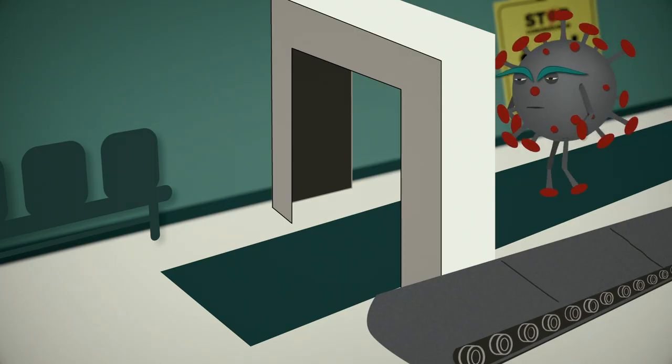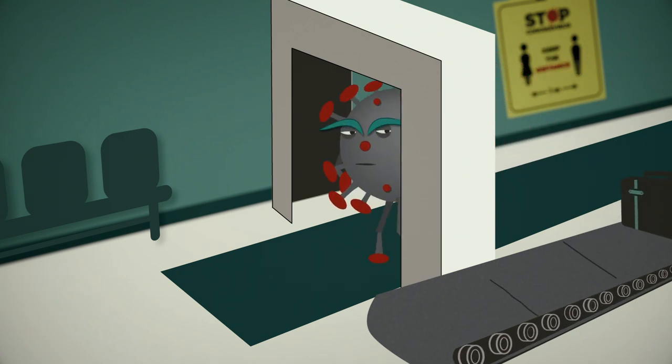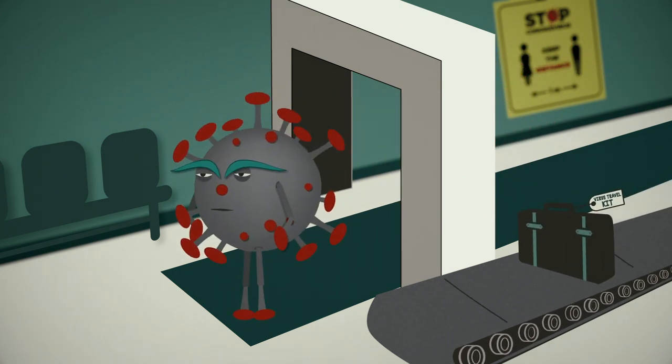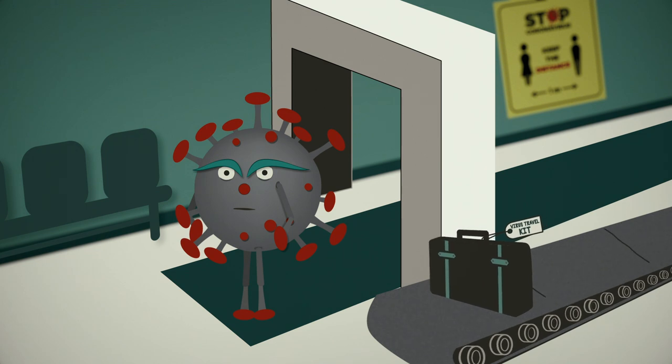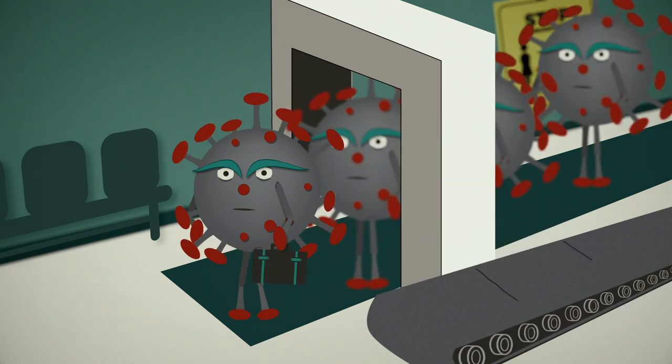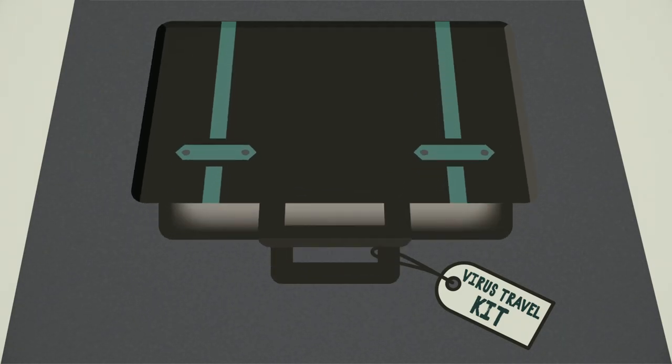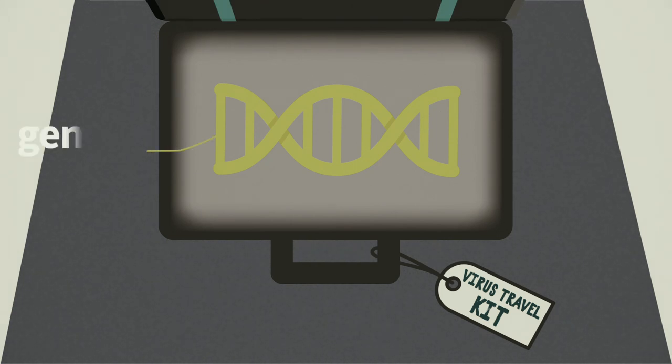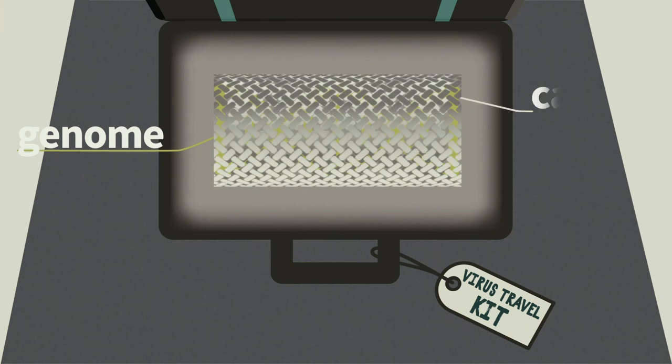Viruses travel light, packing only the baggage they absolutely need to hack into a cell, commandeer its molecular machinery, multiply, and make an escape. A virus's travel kit always includes its genome and a surrounding protein shell, or capsid, which keeps the viral genome safe, helps the virus latch onto cells and wiggle inside, and on occasion abets its offspring's getaway.